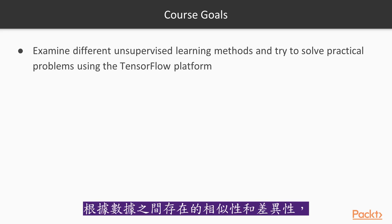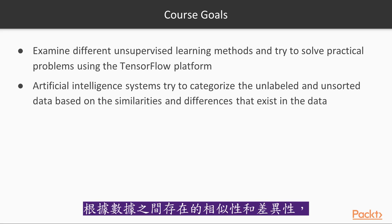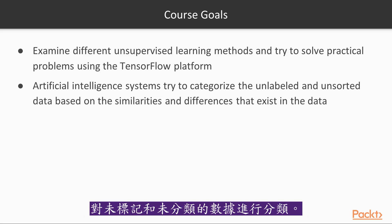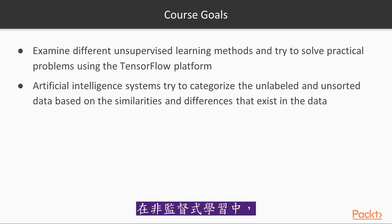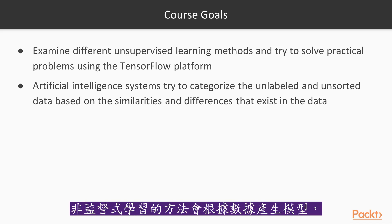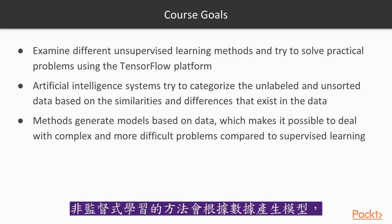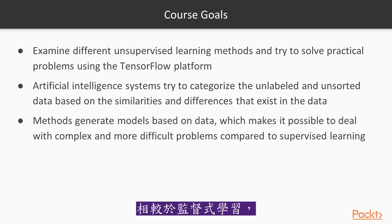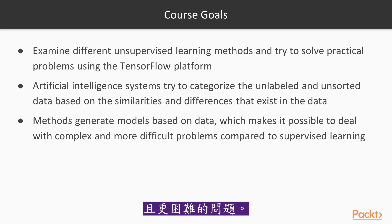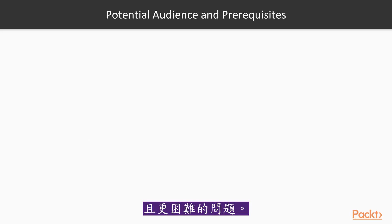In unsupervised learning, artificial intelligence systems try to categorize unlabeled and unsorted data based on the similarities and differences that exist among data. Unsupervised learning methods generate models based on data, which makes it possible to deal with more complex and difficult problems compared to supervised learning.